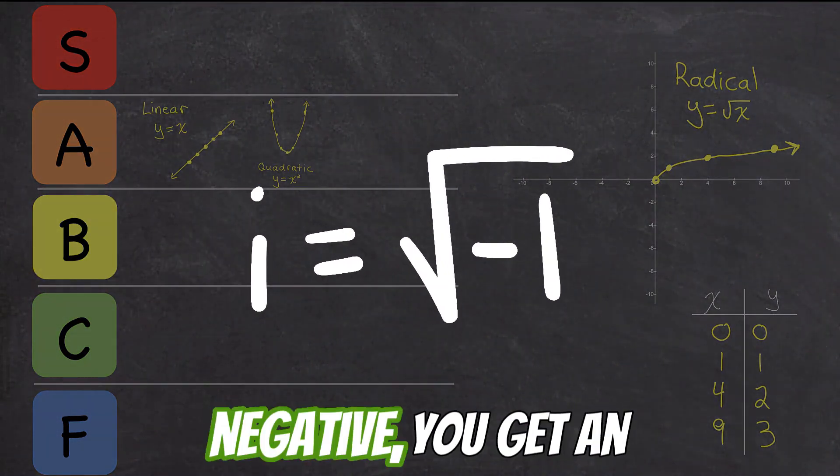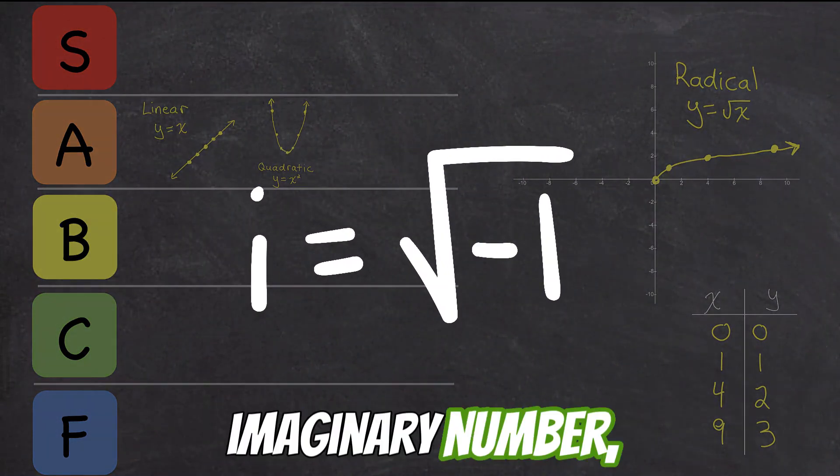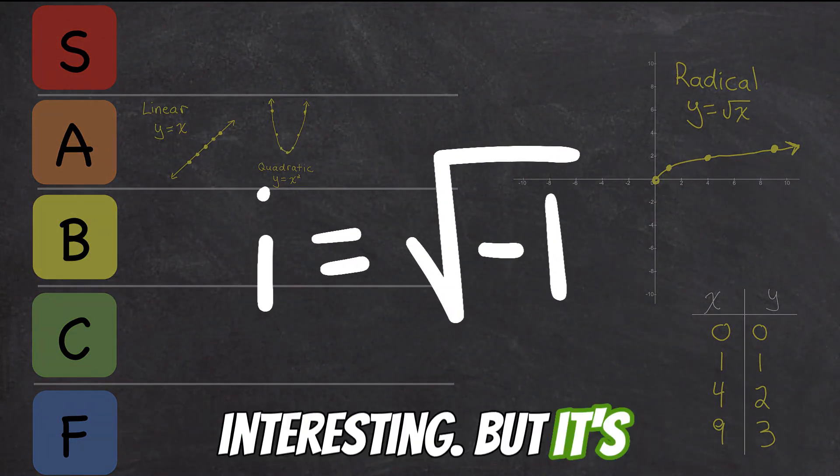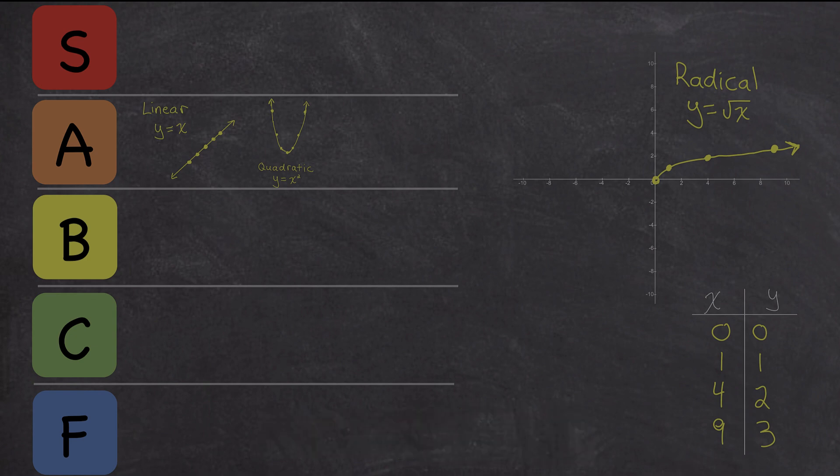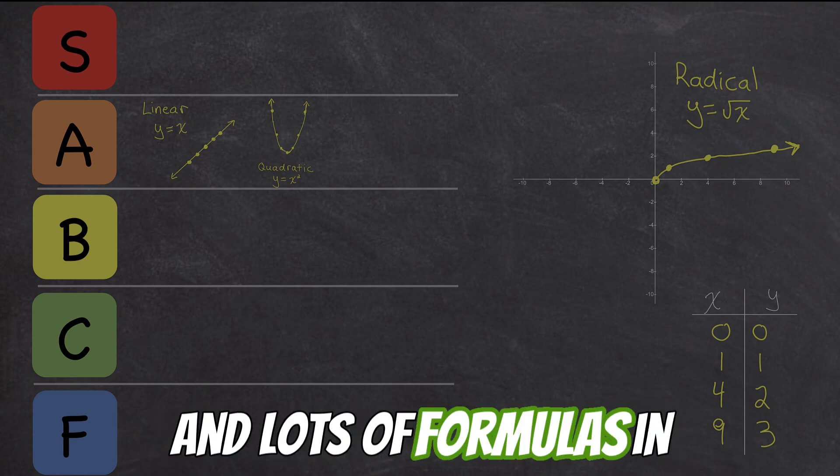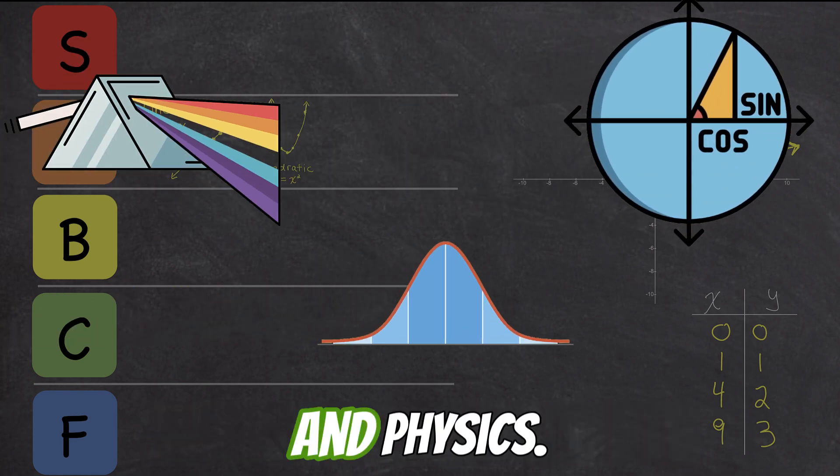If you try and make x negative, you get an imaginary number, which sounds interesting, but it's pretty complex. Square roots do show up in lots of formulas in trigonometry, statistics, and physics.